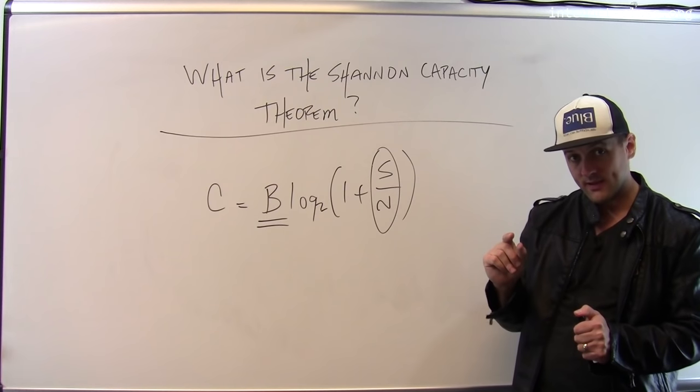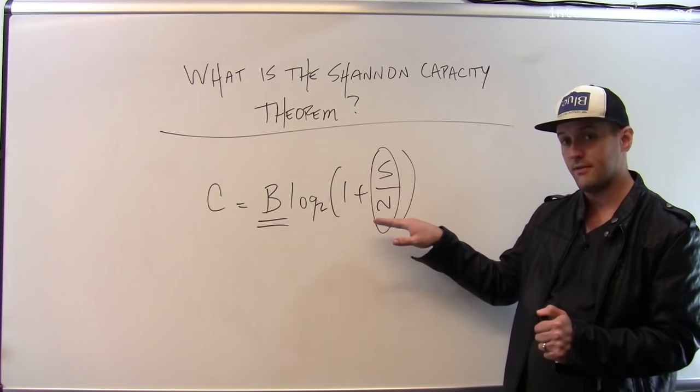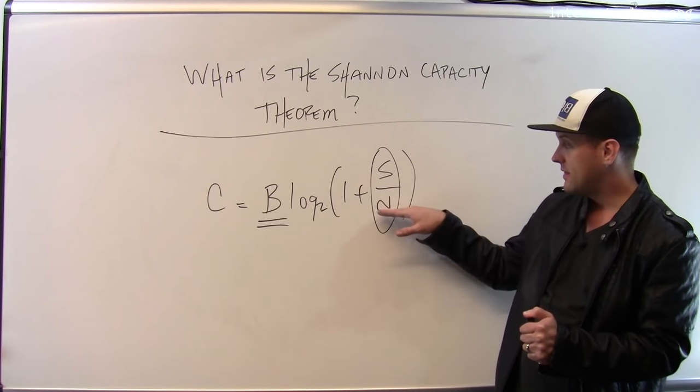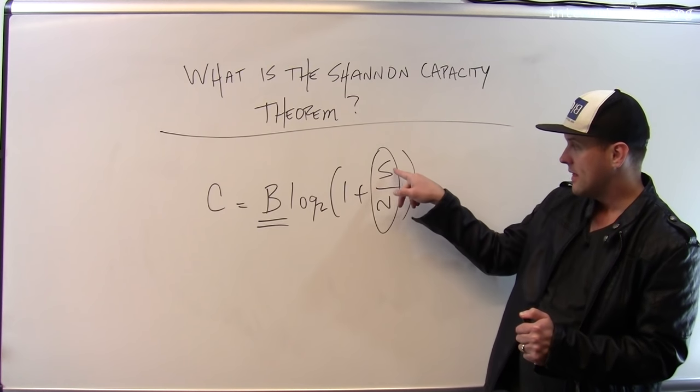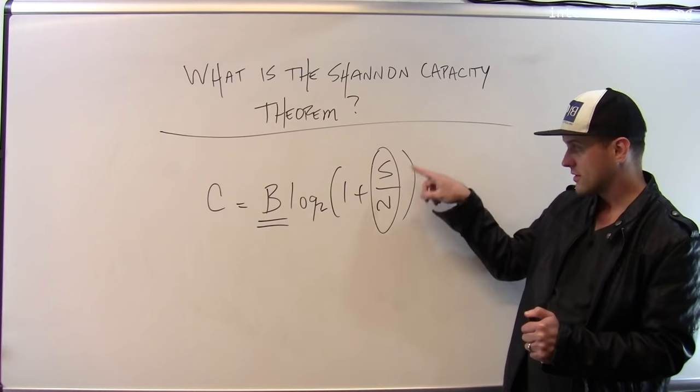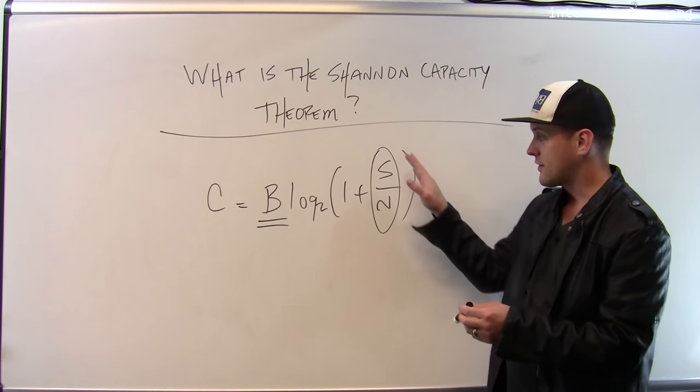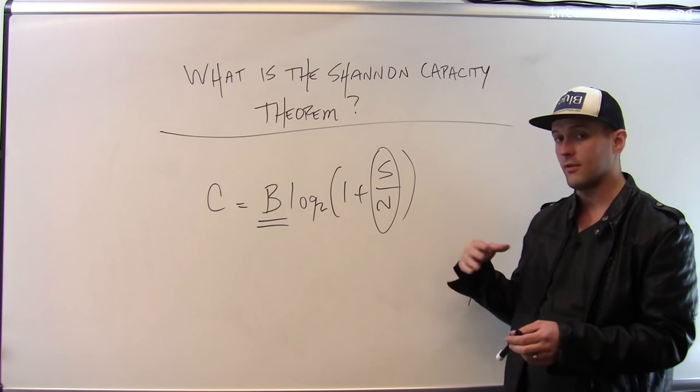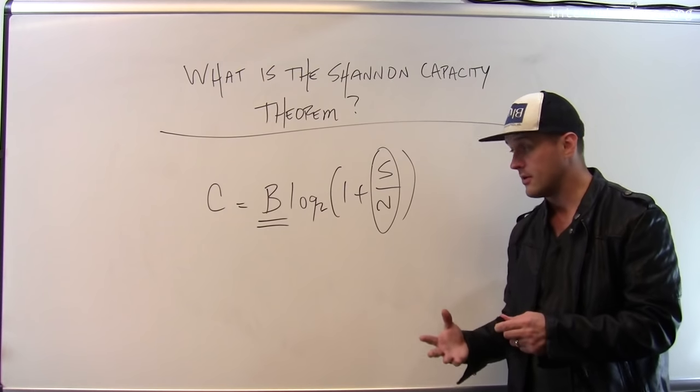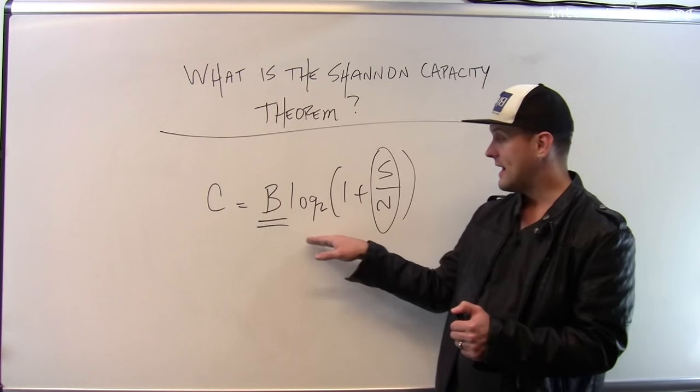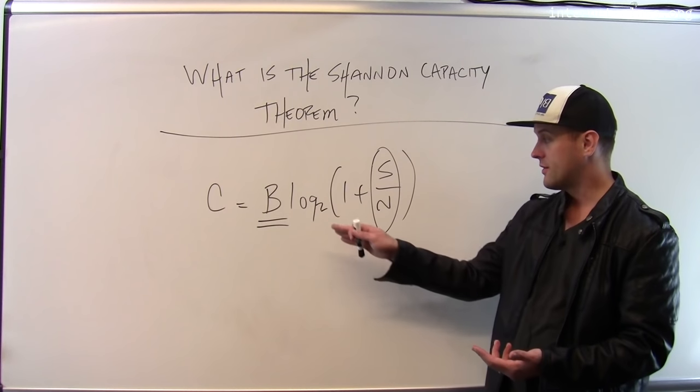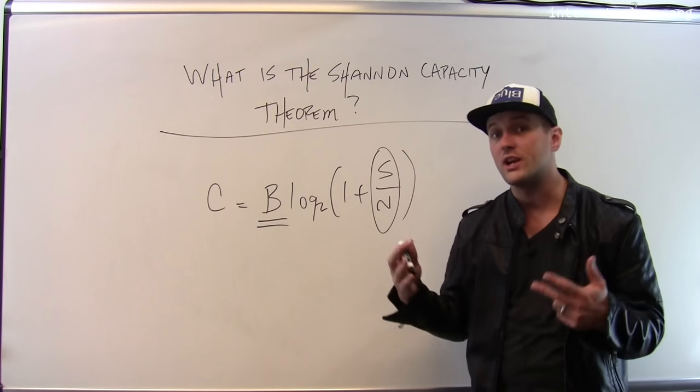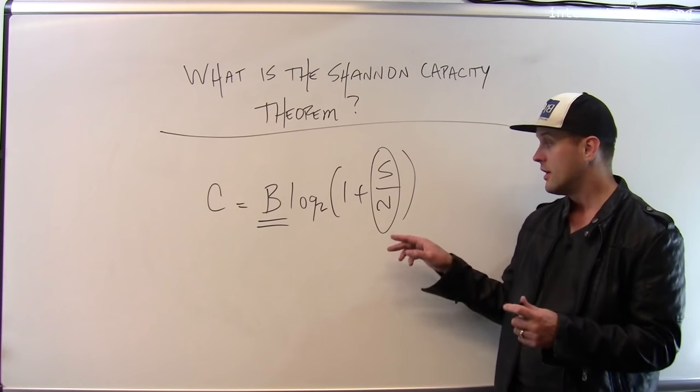However, if the noise gets very strong, then this term will go to zero. As N gets big, this term will get smaller and smaller and eventually go to zero. And this whole term here, one plus S over N, will go to one and the logarithm of one is zero. So this term will go to zero and there's no way to transmit information over the channel.